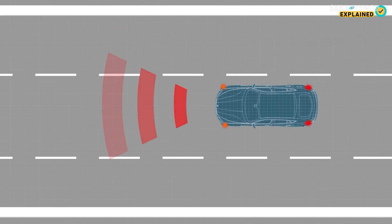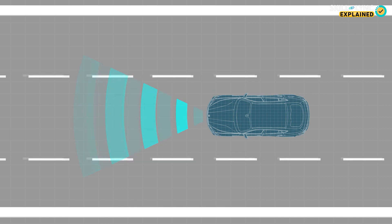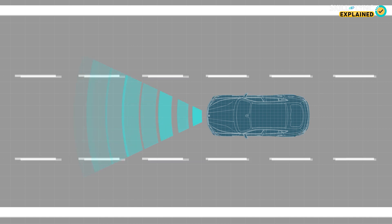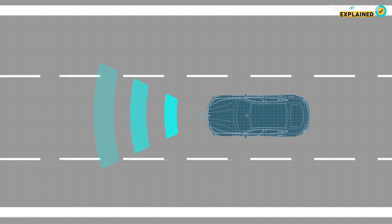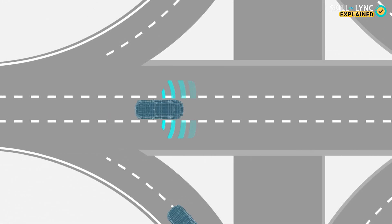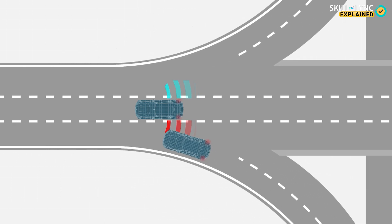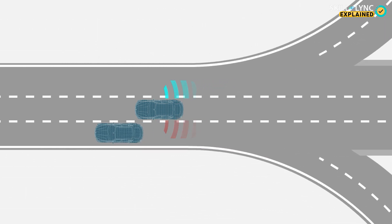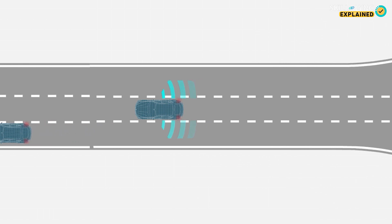In a second scenario, let's say the car is drifting from the lane in which it should be moving without any indicating lights. The ADAS sensors in this case send a beeping sound to alert the driver. In another scenario, if you're changing lanes, the rear sensors alert you of another vehicle that may be moving past the lane, avoiding the possibility of a collision.